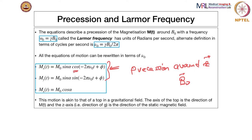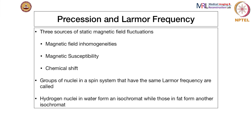The Mx and My components are periodic — this is sinusoidal motion. The Larmor frequency is the gyromagnetic ratio times B0. Now, there are three sources of static magnetic field fluctuations. One is the hardware inhomogeneity itself. The other two are intrinsic properties of the sample: magnetic susceptibility and something called chemical shift. These two affect the value of B0 locally, and this is exploited for imaging.